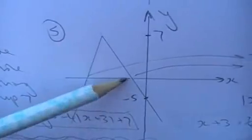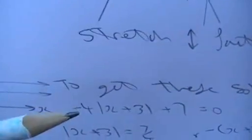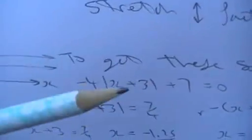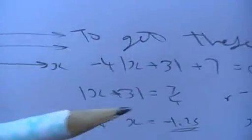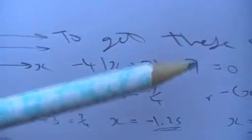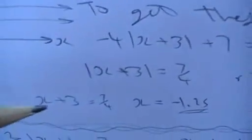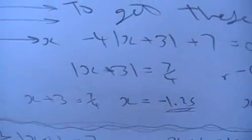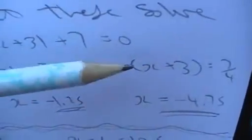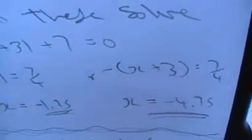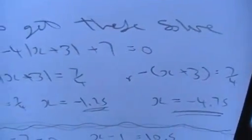Again, if we wanted these two key points here, we would solve the whole function equals zero. Rearrange, take away 7 from both sides, divide both sides by minus 4, and you get x plus 3 is 7 over 4 because the minus and minus cancel. So one solution is x plus 3 is 7 over 4, x is minus 1.25. Another solution is minus x plus 3 is 7 over 4, so rearrange, x is minus 4.75.